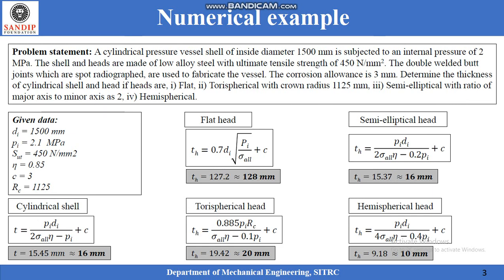Determine the thickness of cylindrical shell and heads if heads are: flat, torispherical with crown radius 1125 mm, semi-elliptical with ratio of major axis to minor axis as 2, and hemispherical.